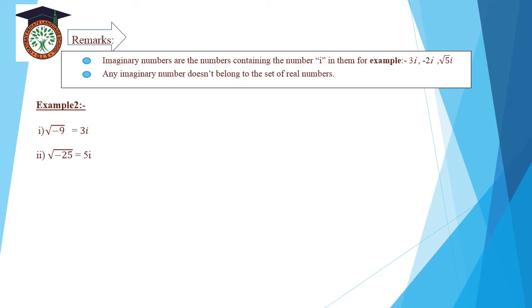Number 2: square root of negative 25. Square root of negative 1 equals i, and square root of 25 equals 5, so the answer is 5i.